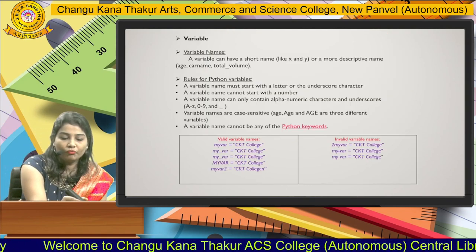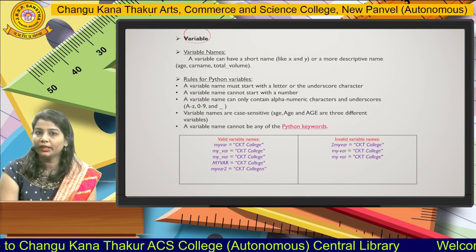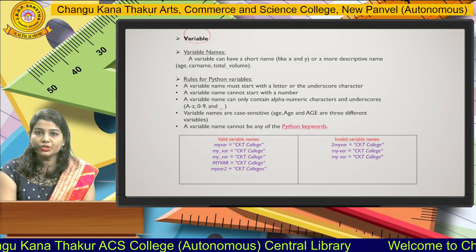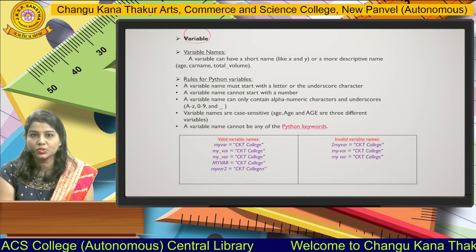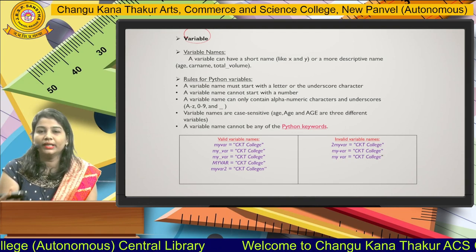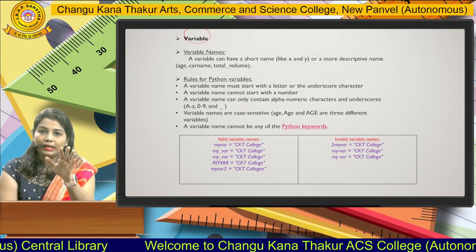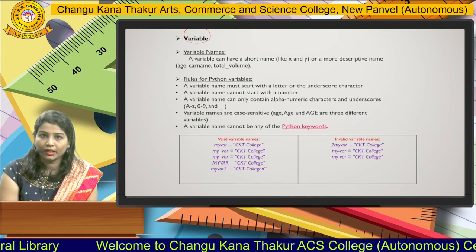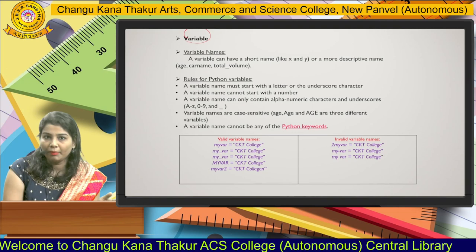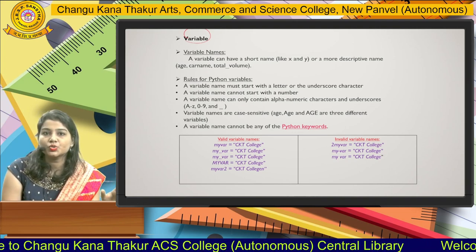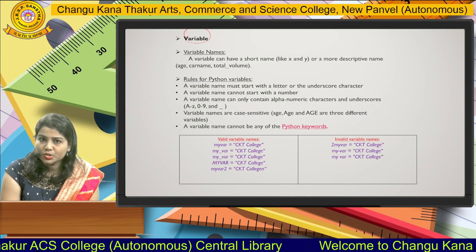We need to see variables and data types, because to develop any program in Python, we need basic knowledge of what a variable and data type means. A variable is just like a name of a person — every person has a name, which is called an identifier. A variable is a name given to a memory location where your data will get stored. When creating a variable, there are some rules to follow.